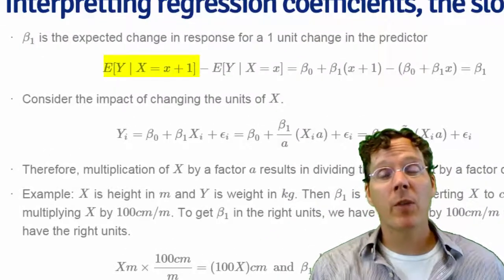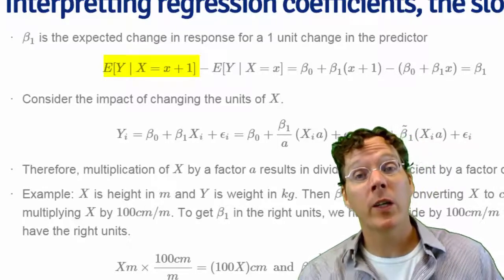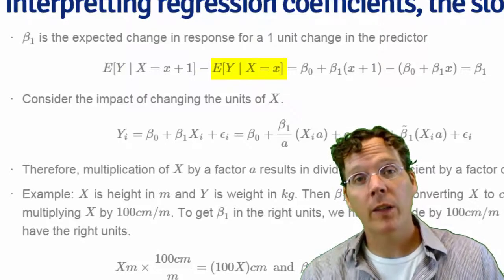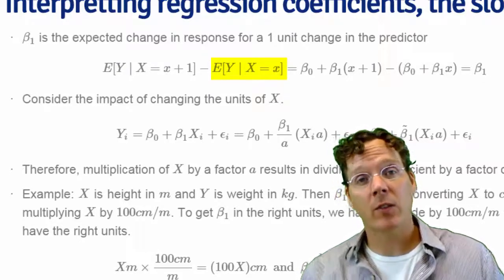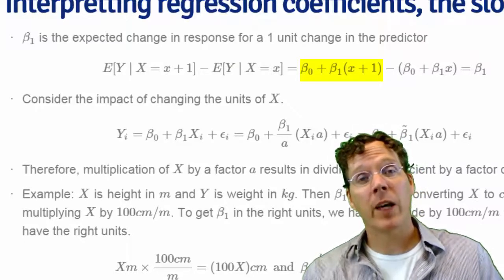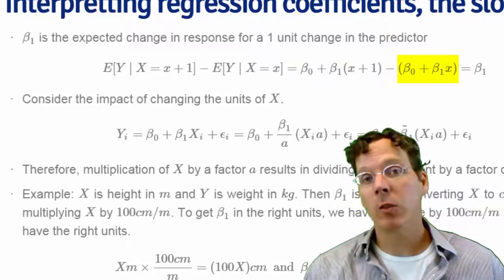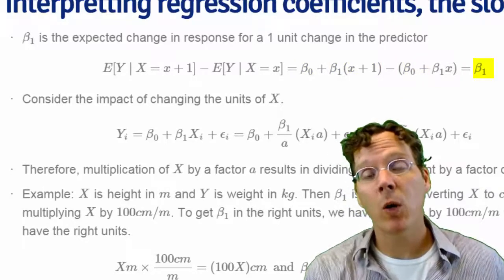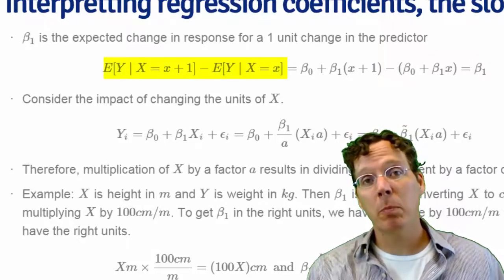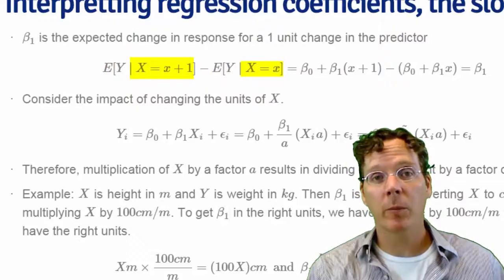Take the expected value of Y given that X takes the value X plus 1, a one unit increase in X, and subtract off from it the expected value of Y given that X takes the value X. Well that works out to be beta naught plus beta one times X plus one minus beta naught plus beta one times X. Do the arithmetic and that works out to be beta one.